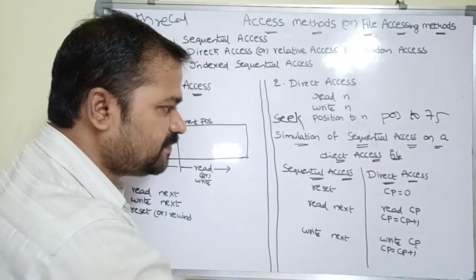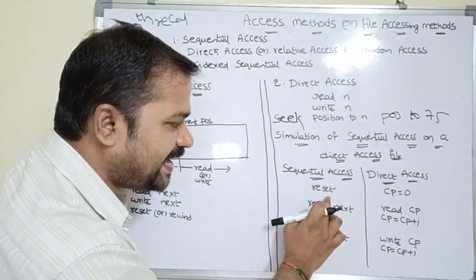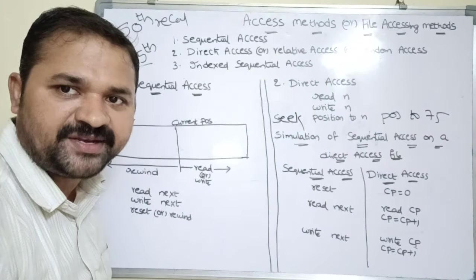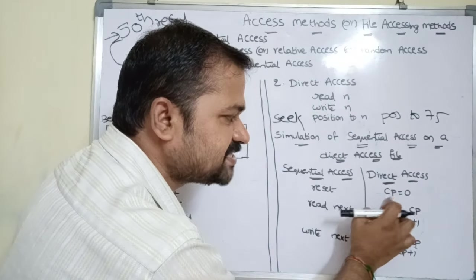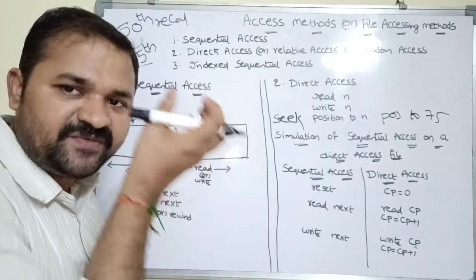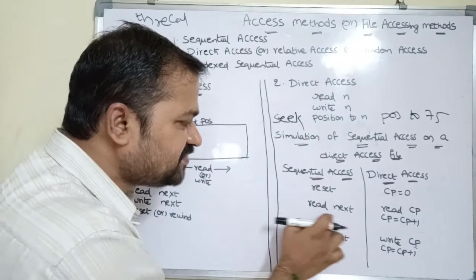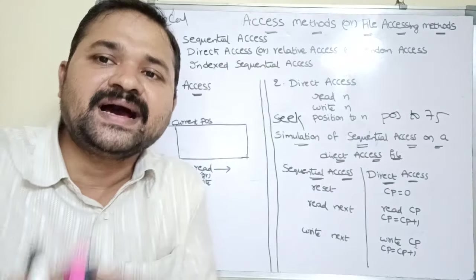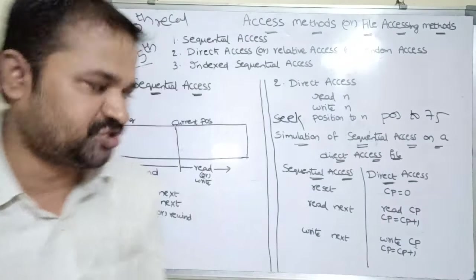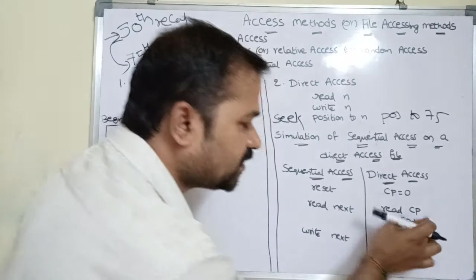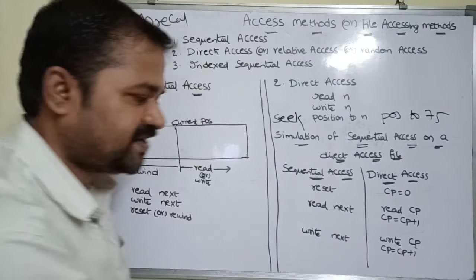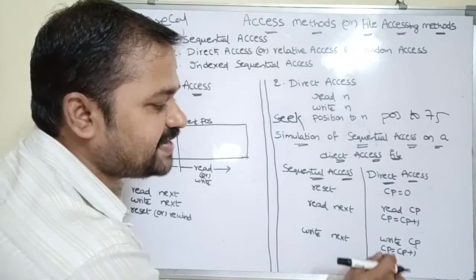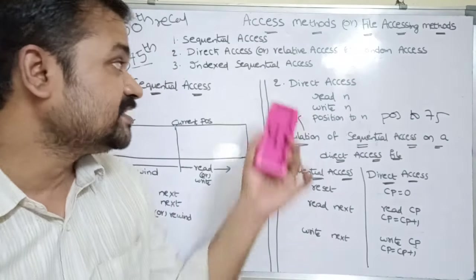Now let us see the simulation of sequential access using direct access. In sequential access, a reset command moves the current position to the beginning of the file. A 'read next' command reads the current record and advances the read pointer — in direct access this is equivalent to 'read cp' followed by 'cp = cp + 1'. Similarly, 'write next' in sequential access corresponds to 'write cp' then 'cp = cp + 1' in direct access.